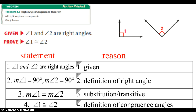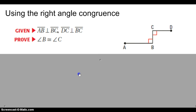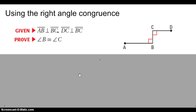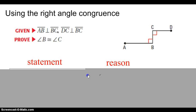Now I want to show you what a proof would look like that would use this theorem — the right angles congruent theorem. AB is perpendicular to BC, and DC is perpendicular to BC. In your head, you should realize that because they're perpendicular, it makes them 90 degrees, and because they're 90 degrees, I can say they are congruent. Let's look at what the proof would look like.